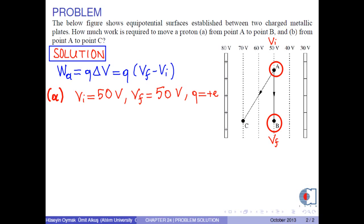As a result, the work required to move a proton from point A to point B is calculated by this formula. Thus, the result is zero. This result is reasonable because there is no potential difference between point A and point B. This means that you don't have to perform any work.